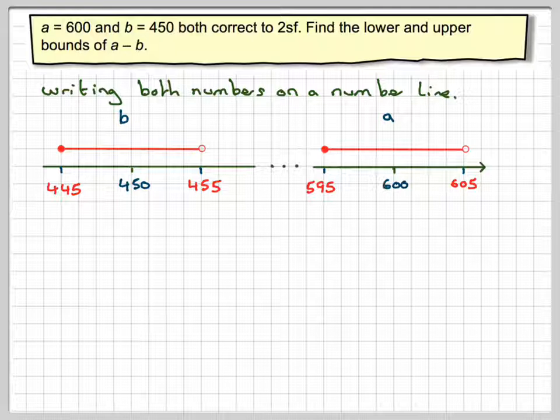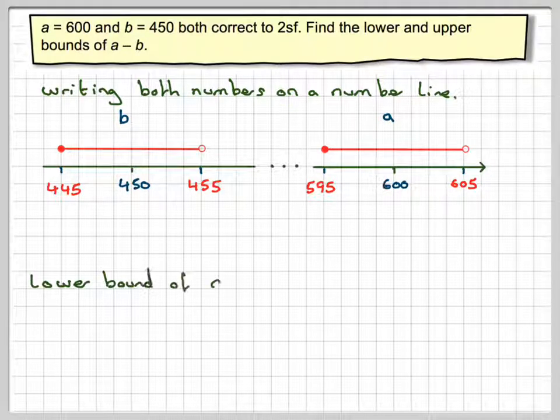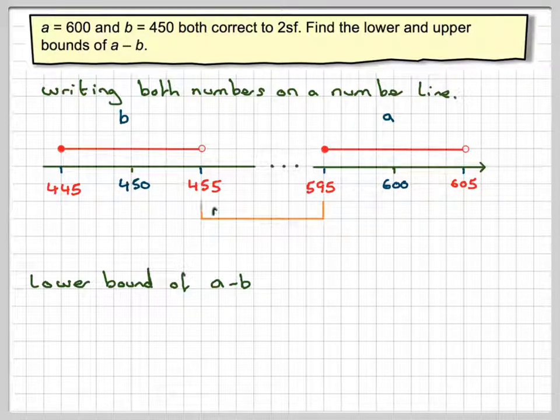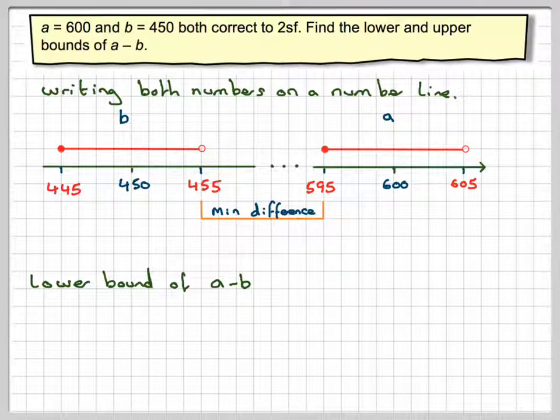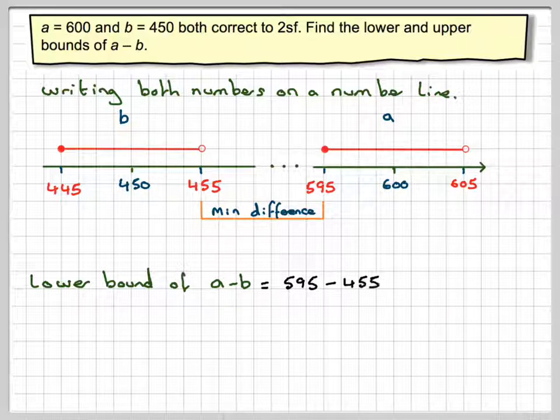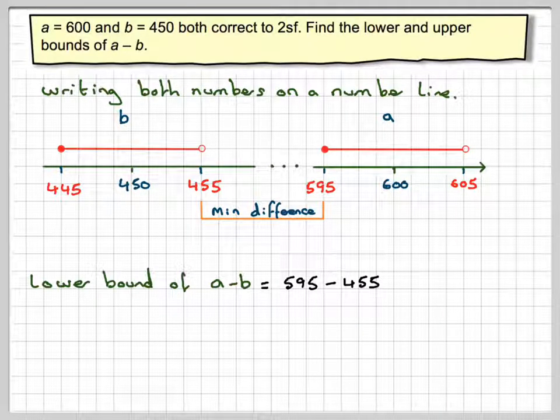In order to find the lower bound, we want the minimum difference, so it's going to be 595 minus 455, that's the minimum difference between the two. So it's 595 minus 455, which gives me 140.